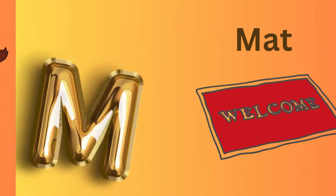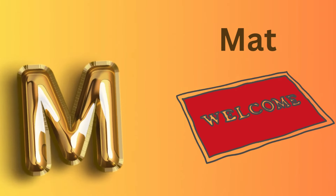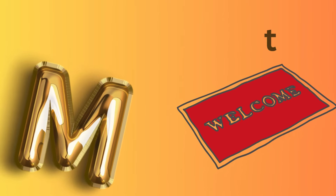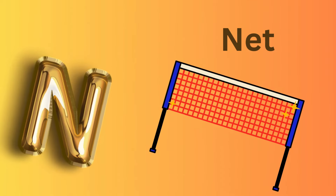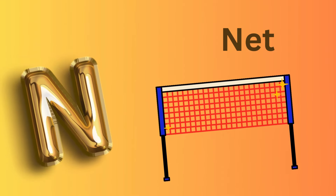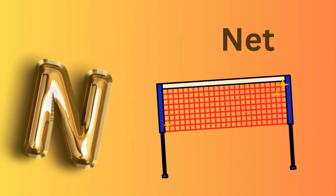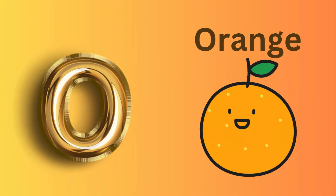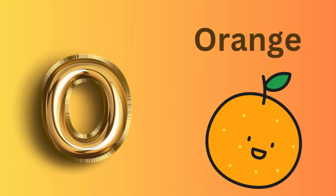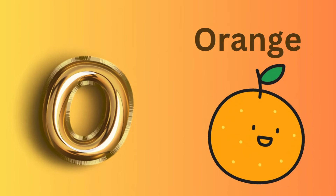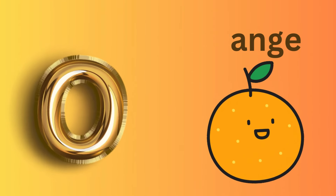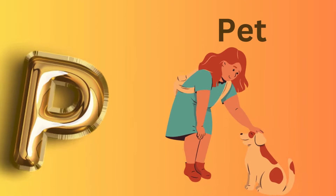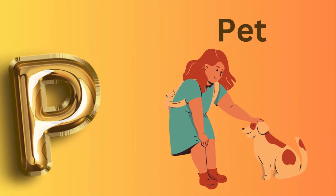M is for Mat, M-M-Mat. N is for Net, N-N-Net. O is for Orange, O-O-Orange. P is for Pet, P-P-Pet.